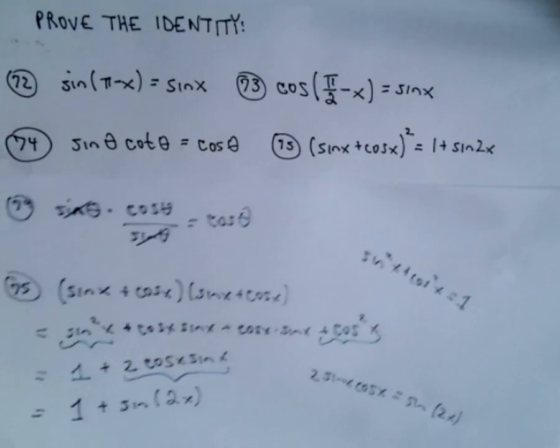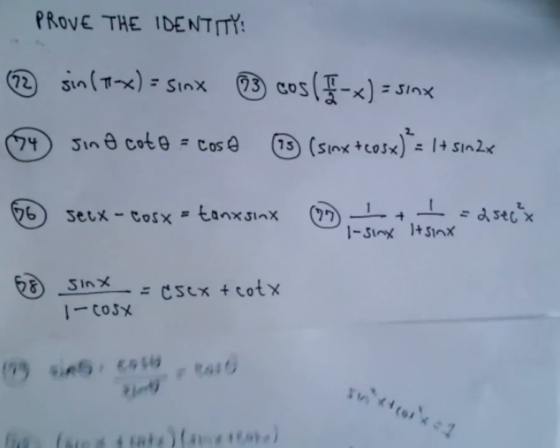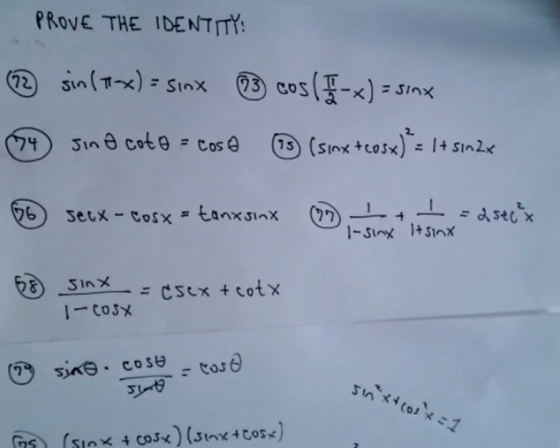And again, we've justified the identity and that's all there is to it. So again, just some basic identities I want to refresh you on. I'll do 76, 77, and 78 in the next video.